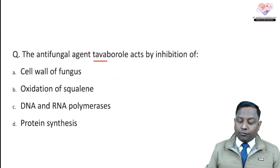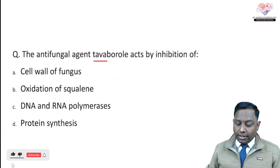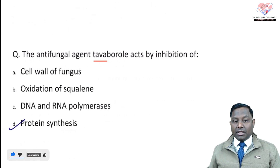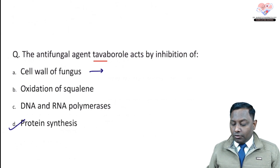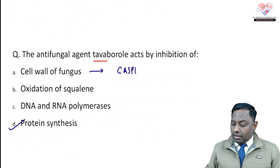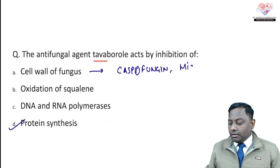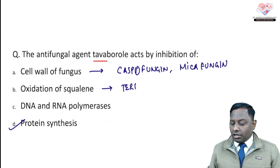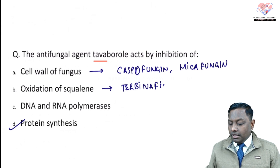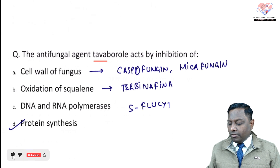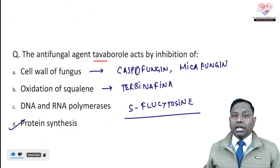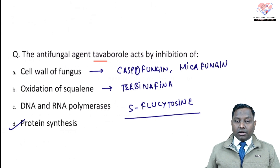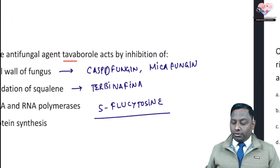Question 4: Antifungal agent Terbinafine acts by inhibition of squalene epoxidase — it is a protein synthesis inhibitor mnemonic aside, it inhibits squalene epoxidase, blocking fungal cell membrane ergosterol synthesis. Echinocandins — Caspofungin, Micafungin, Anidulafungin — are fungal cell wall inhibitors. 5-Flucytosine inhibits DNA and RNA synthesis and is very effective along with Amphotericin B, including for CNS fungal infections.